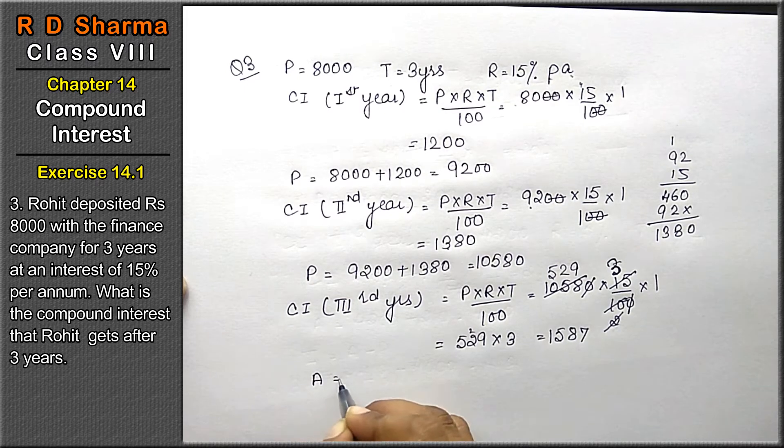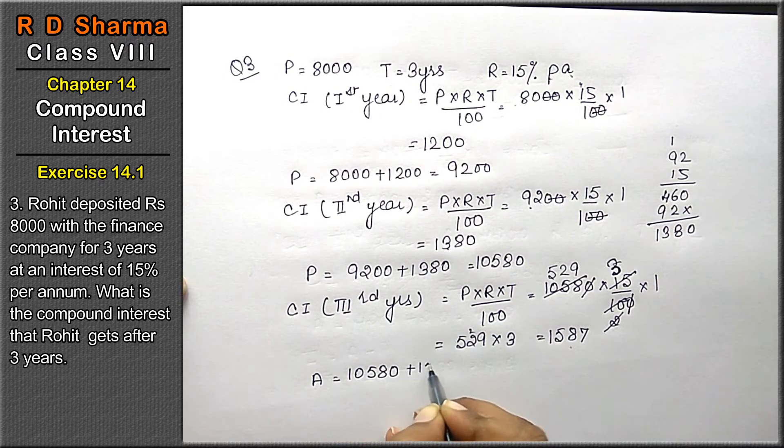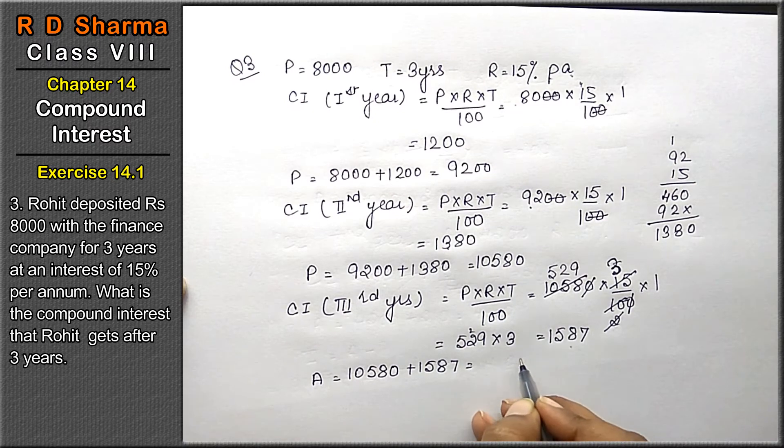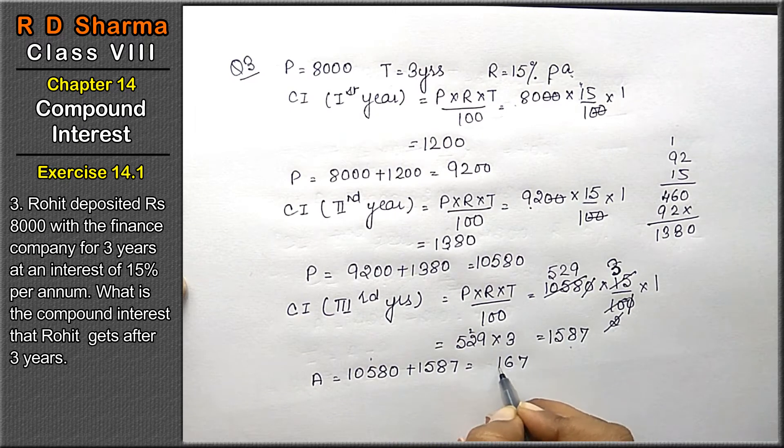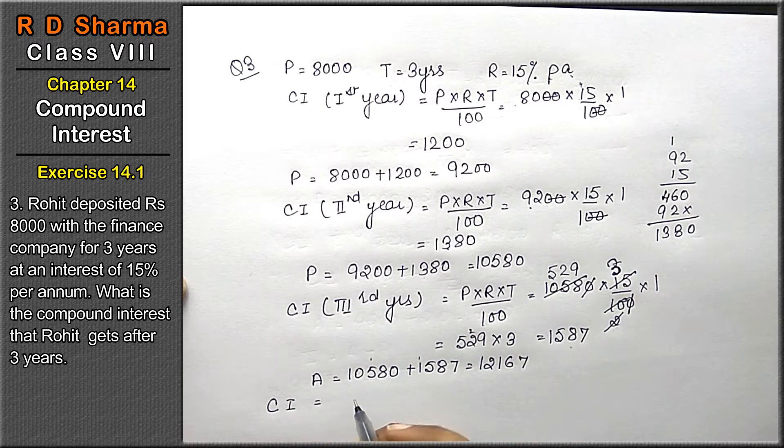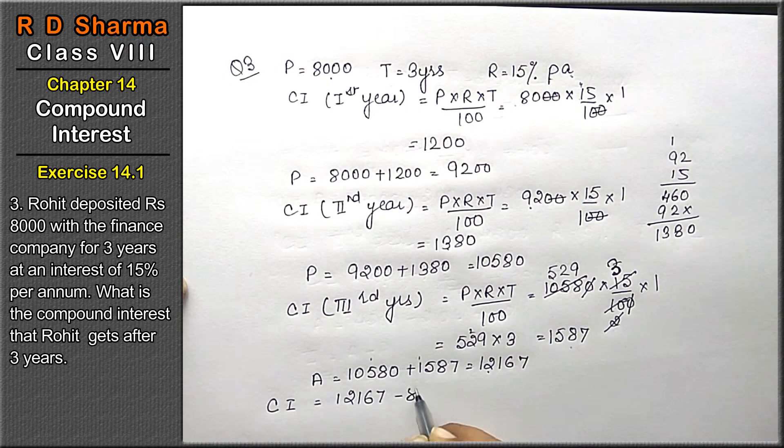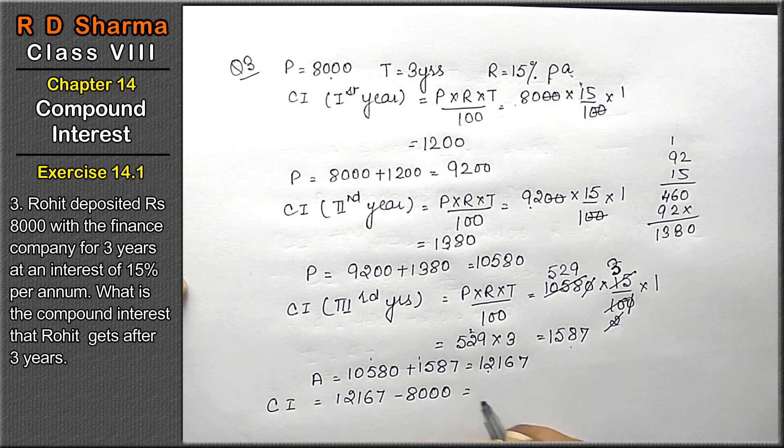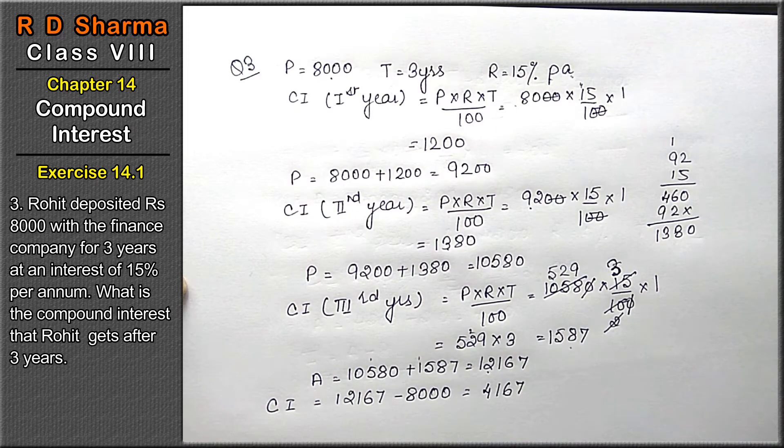Now the total amount we got after 3 years is 10,580 plus 1587 equals 12,167. The compound interest for 3 years is 12,167 minus 8000, that means 4,167 rupees is the compound interest. Let's do the next question.